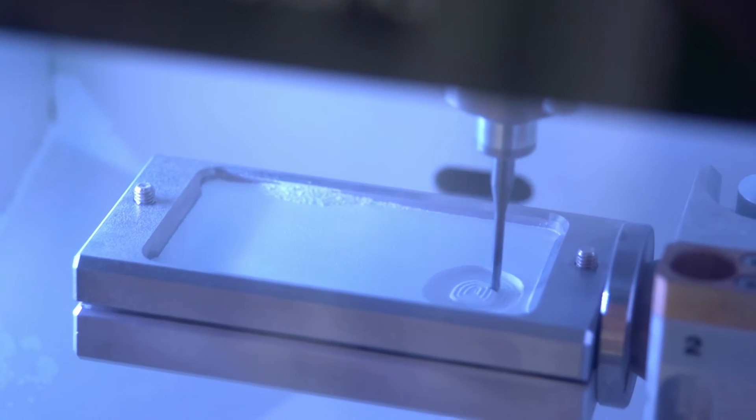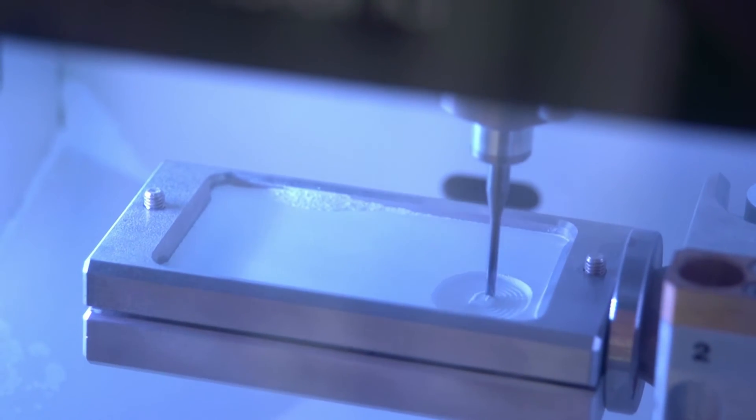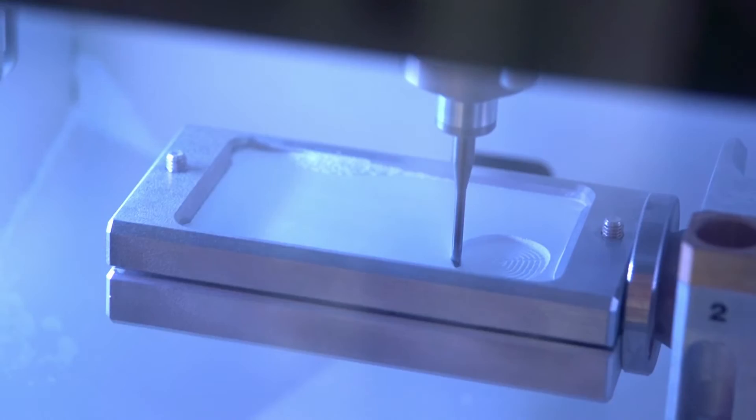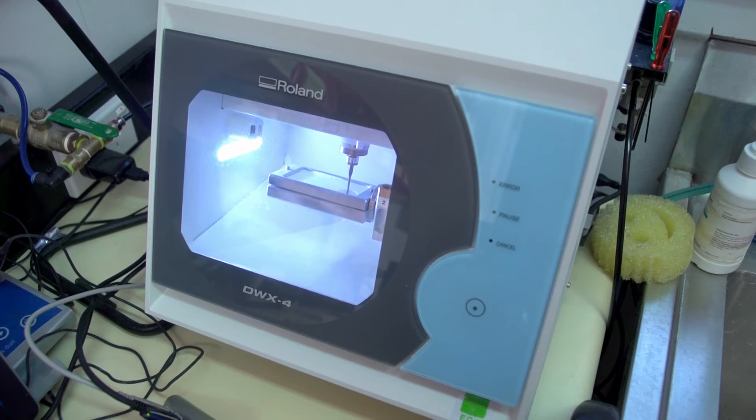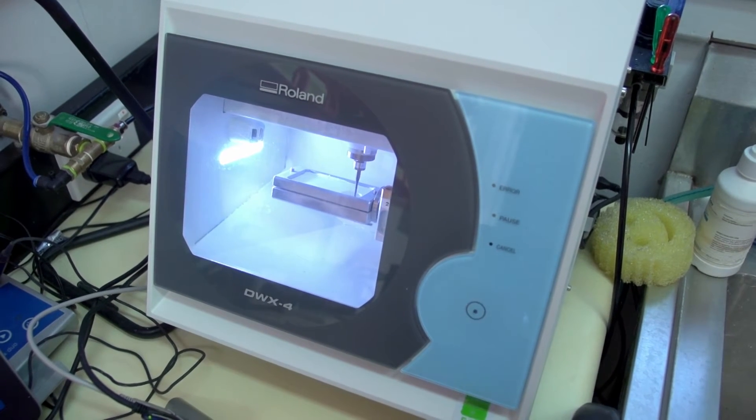We also mill out prototypes for restorations. And so I'll mill out a prototype, place it in the patient's mouth and then allow them to live with the proposed restoration. Having the DWX4 allows me to make a variety of PMMA restorations in both single colour and multi-colour so that the patient can have a realistic prototype.